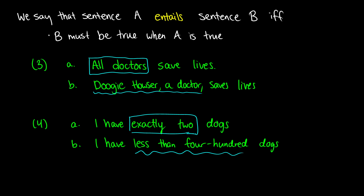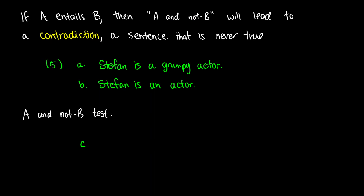But there are some cases where intuition might not do the best job. So we need some linguistic tests — some scientific tests — to determine whether or not there's entailment. The first test, and the main test you should be using, is called the contradiction test.